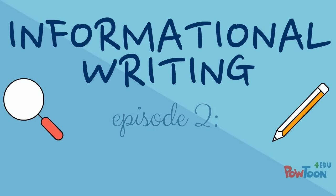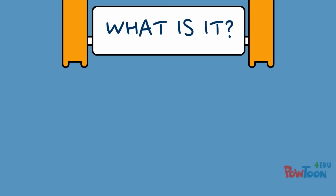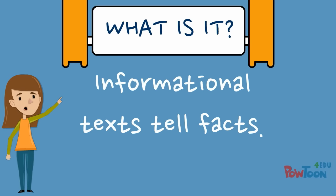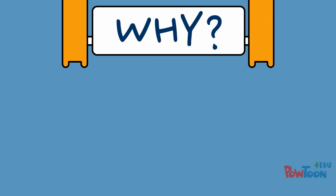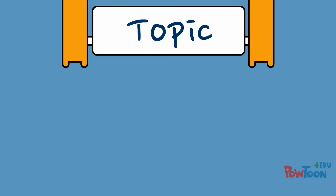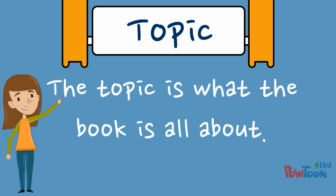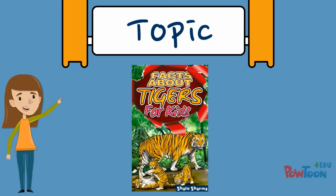Informational Writing, Episode 2: Choosing a Topic. Informational texts tell facts — they are always true. Authors write informational books to teach other people about a topic. The topic is what the book is all about. The topic of this book is tigers.